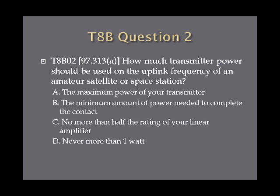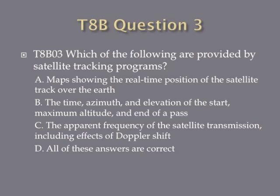Question 2: How much transmitter power should be used on the uplink frequency of an amateur satellite or space station? Question 3: Which of the following are provided by satellite tracking programs? A. Maps showing the real-time position of the satellite track over the Earth? B. The time, azimuth, and elevation of the start, maximum altitude, and end of a pass? C. The apparent frequency of the satellite transmission, including effects of Doppler shift? Or D. All of these answers are correct.